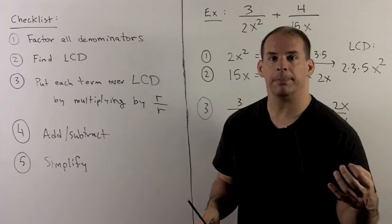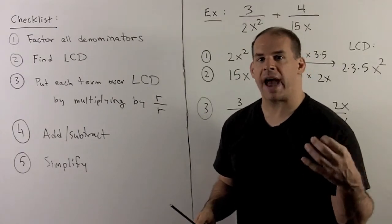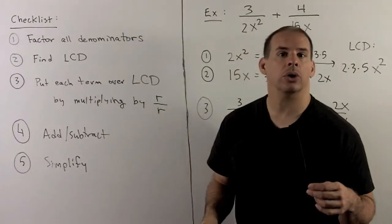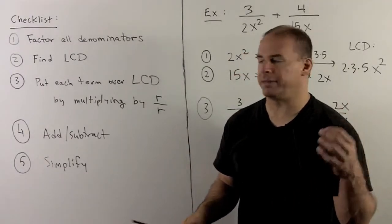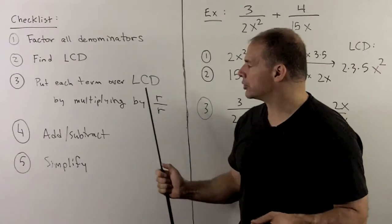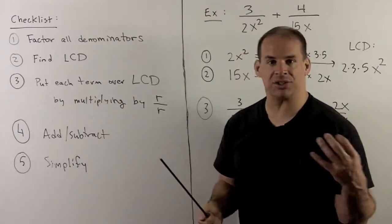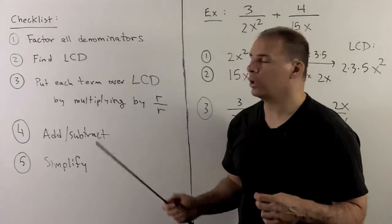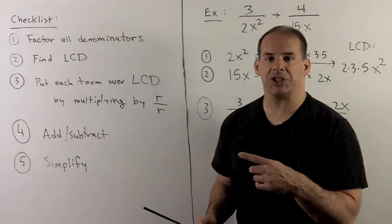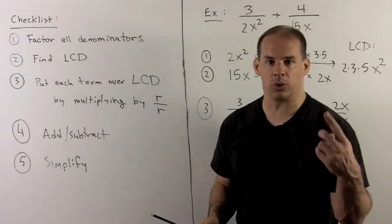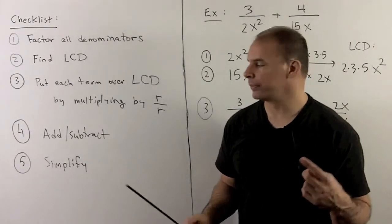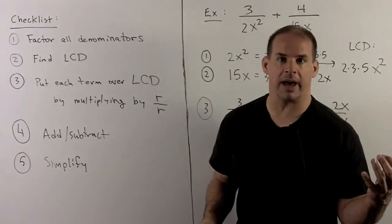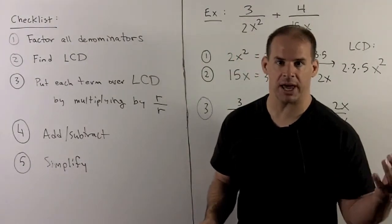Let's put our procedure for addition and subtraction into a checklist. First step: factor all denominators in the sum or difference completely. Then use those factors to find the least common denominator. Take each term and multiply by the appropriate factor R over R so that the term's denominator becomes the least common denominator. With all denominators matching, add or subtract using our rules. Finally, when all terms are combined, see if we can simplify — and that gets us to our final answer.